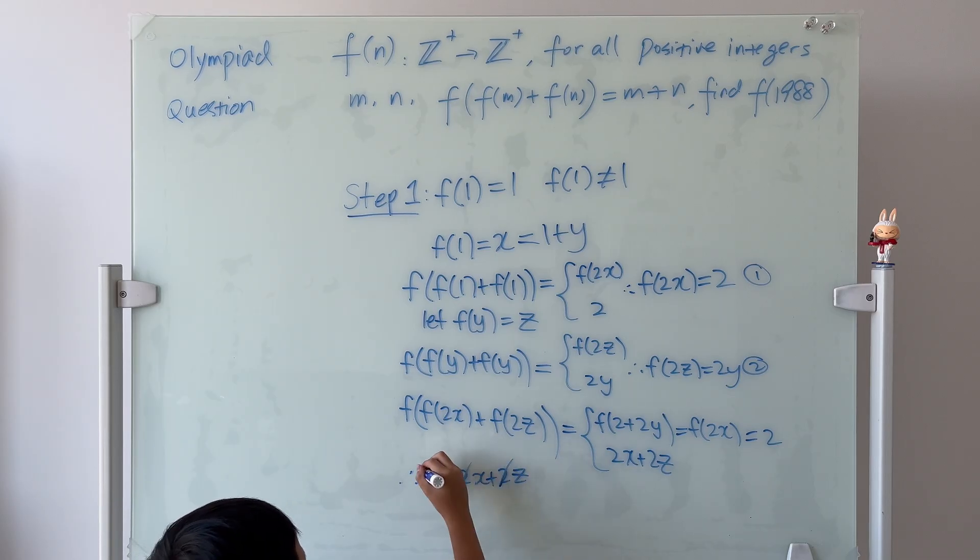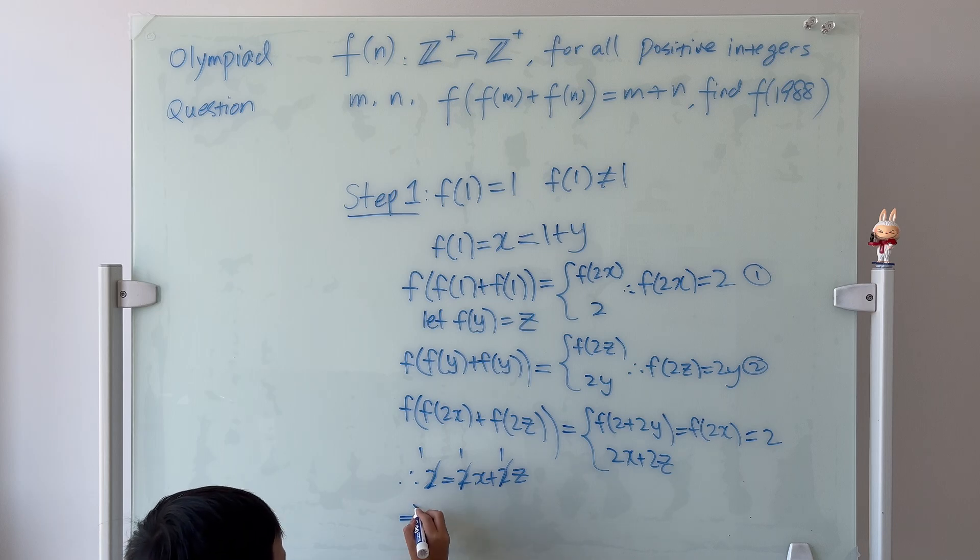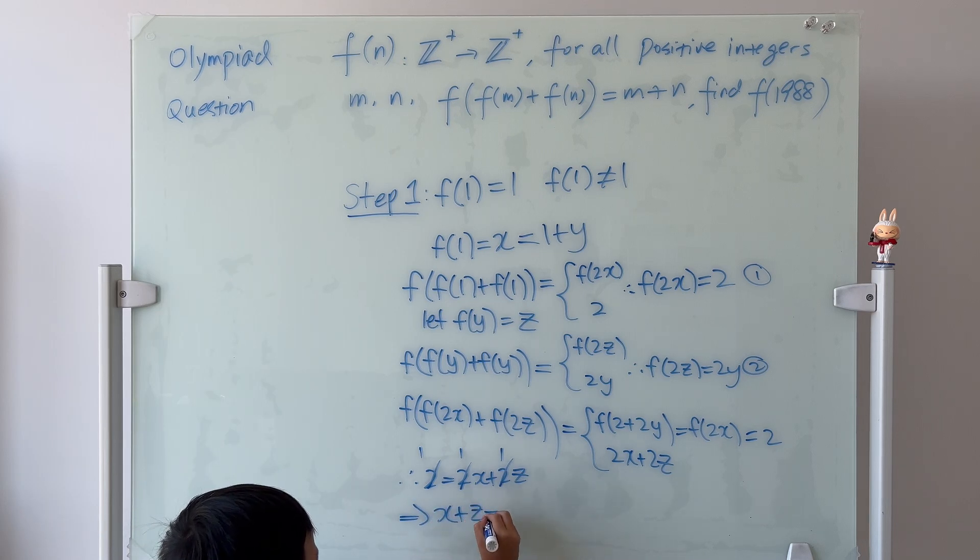And, so, we can cancel all of this out. So, then, we know that x plus z is equal to 1.